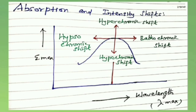Regarding absorption and intensity shifts, there are four types: Hypsochromic shift, Bathochromic shift, Hyperchromic shift, and Hypochromic shift. The first is the Hypsochromic shift, also called the Blue shift. Lambda max shifts towards a shorter wavelength due to removal of conjugation.